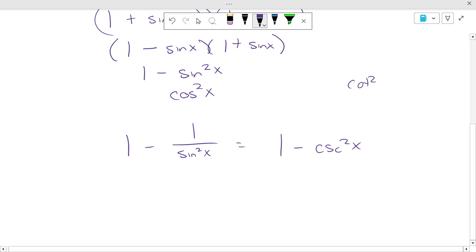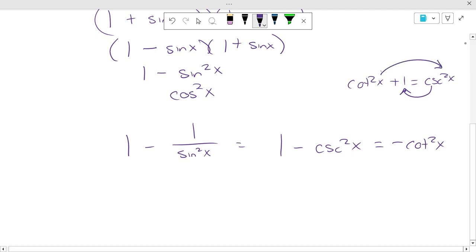Well, I know that cotangent squared of x plus 1 equals cosecant squared of x. So what would this equal? Not cotangent squared. You're close. Negative cotangent squared of x. Because if we subtract cosecant to get to this side and we subtract cotangent to get to that side, 1 minus cosecant squared would be negative cotangent squared. Okay? Negative cotangent squared.